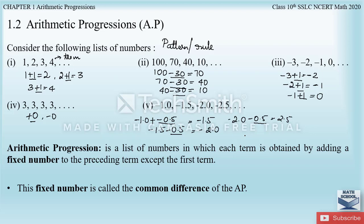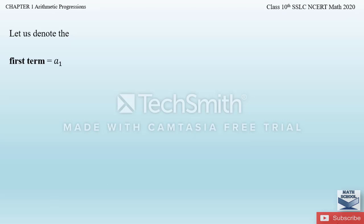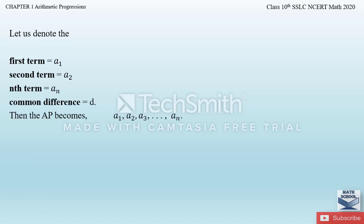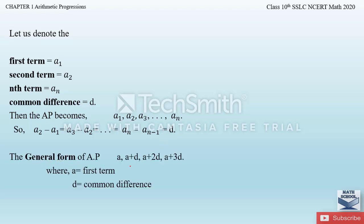The fixed number is called the common difference of the AP, denoted by d. It can be positive, negative, or 0. We denote the first term as a1, second term as a2, and the nth term as an. In an AP, the common difference d is the same between all consecutive terms: a2 minus a1 equals a3 minus a2, and so on.